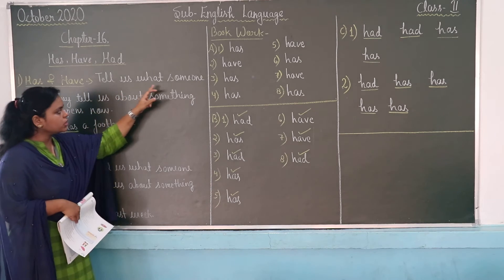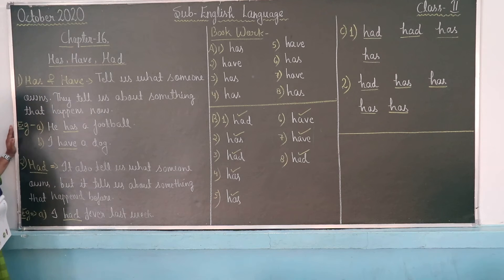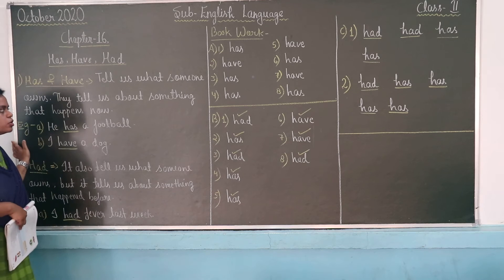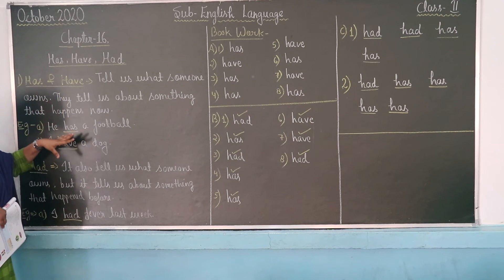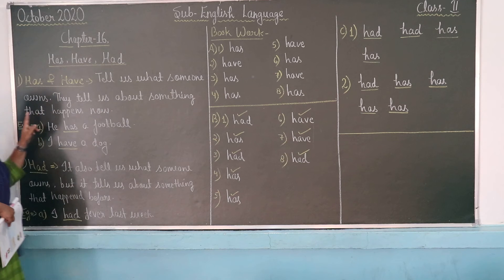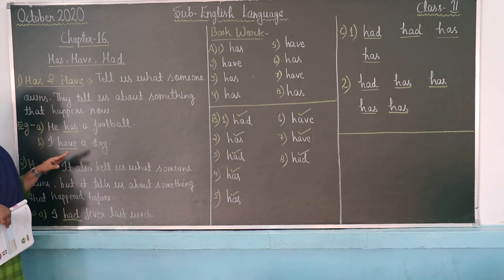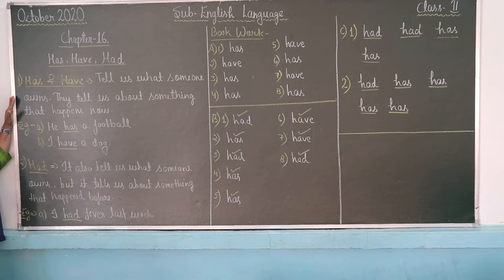Has and Have tell us what someone owns. We use Has and Have as required by the sentence. They tell about something that happens now, in the present. So Has and Have are basically used for showing what someone owns and for the present tense.